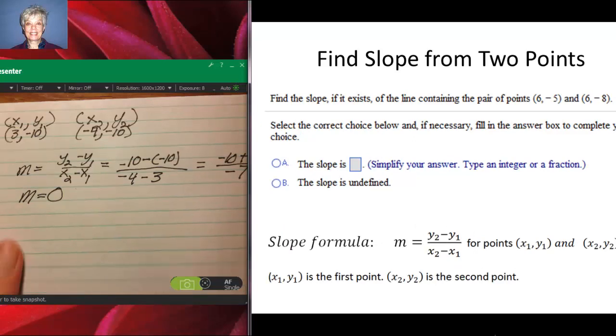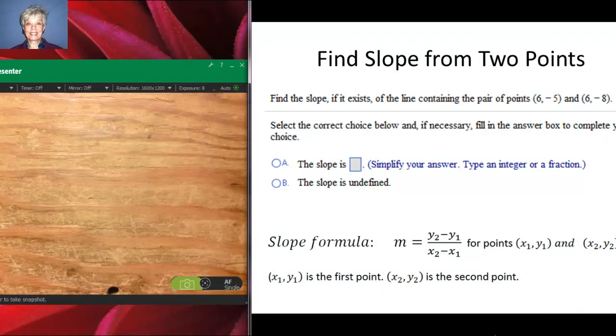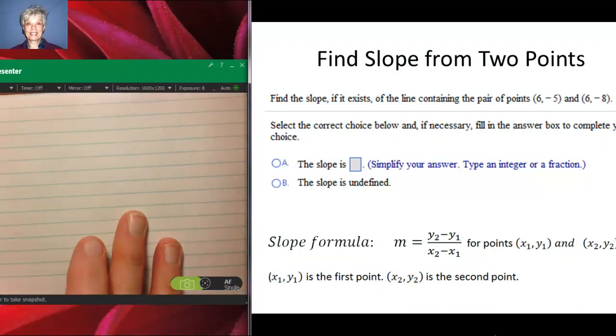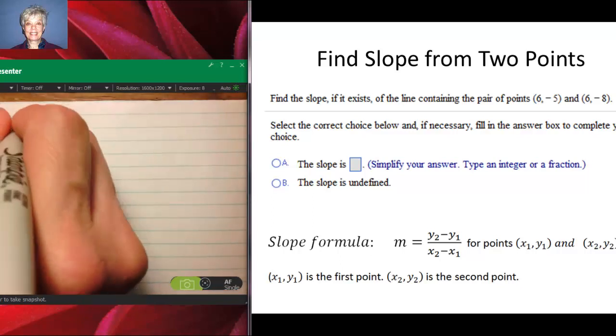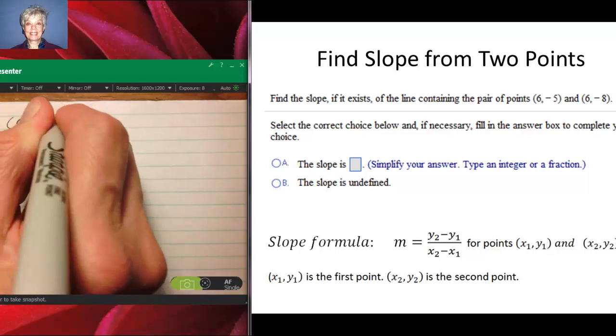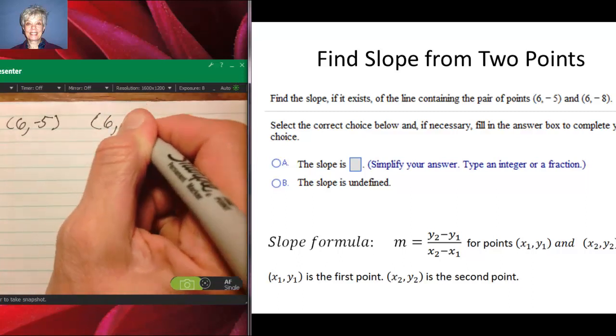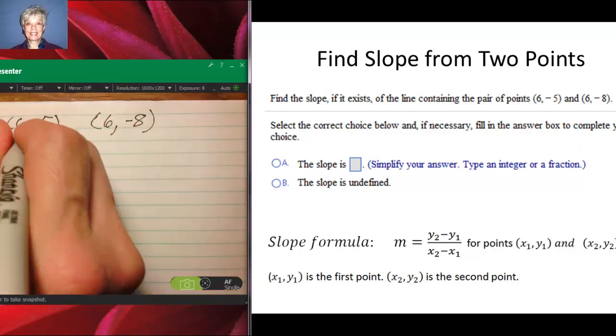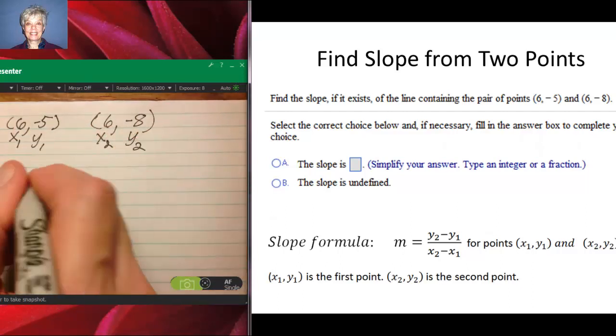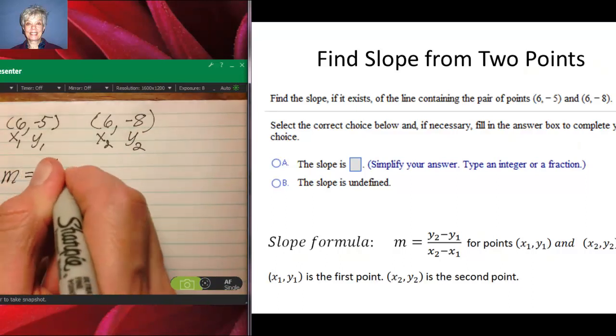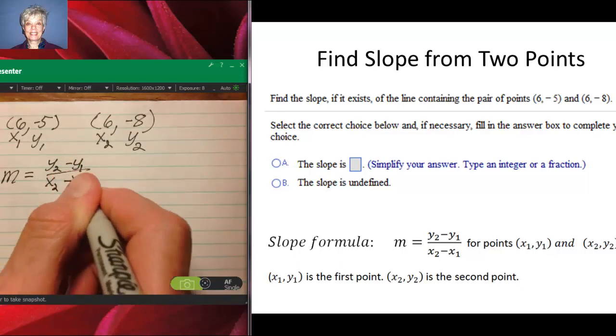Okay, now this is our last one. We have two points: (6, -5) and (6, -8). So this is x1, y1 and x2, y2. And using the formula m equals y2 minus y1 over x2 minus x1...